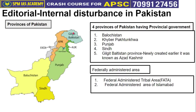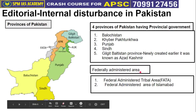Just as India has union territories, Pakistan also has what are called federally administered areas. There are two such union territories: FATA — Federally Administered Tribal Area — and the Federal Administered Area of Islamabad. Just as Delhi is India's union territory and seat of the central government, Islamabad is Pakistan's union territory, referred to as the federally administered area, because the central government office is located there.